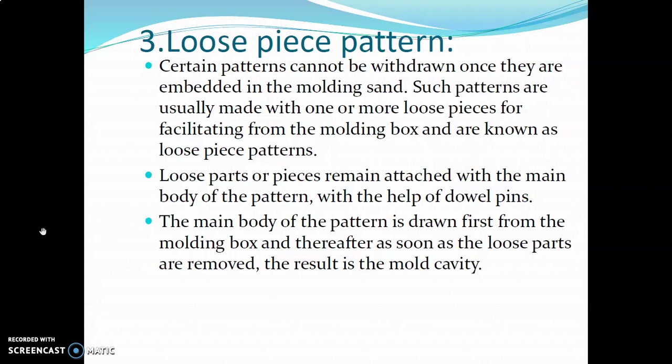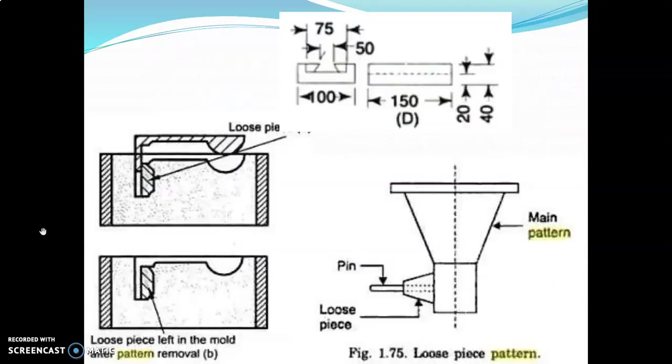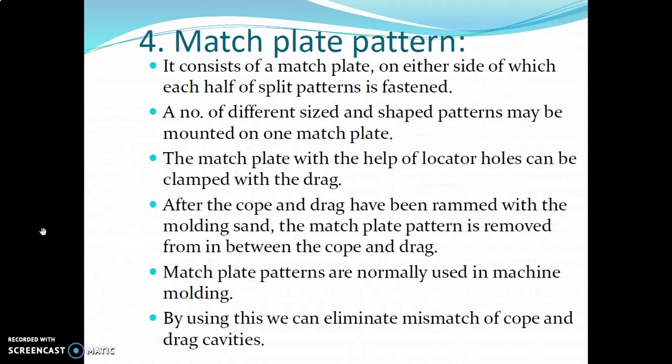The main problem with certain shapes is that we cannot remove them easily from the mold to create the cavity, and this will create a bad impression on the inside surface of the hole. So the loose piece pattern is made with a number of loose parts which are assembled, and after creating the mold cavity they are removed from the mold. You can see here we have three different parts — a main pattern with loose pieces that are fitted, and after removing them you get the single component. This is the example of the loose piece pattern.